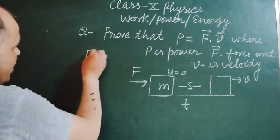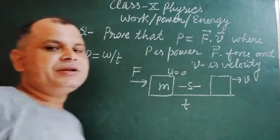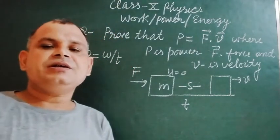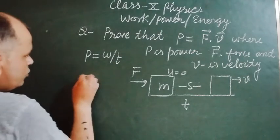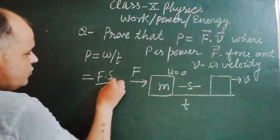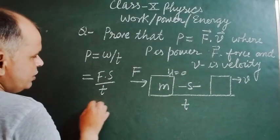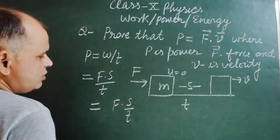The rate of doing work is called power. So P equal to W upon T and W is work, F into S, force into displacement upon T. And F into S we write as F into S over T.